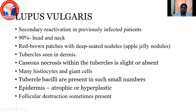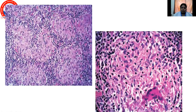Coming to lupus vulgaris, it is a secondary reactivation in previously infected patients with tuberculosis. 90% of lesions are seen in the head and neck and they present as red-brown patches with deep-seated nodules — the apple jelly nodules. Tubercles are seen in the dermis and caseous necrosis within the tubercles may be present or absent. Many histiocytes and giant cells are seen, and tubercle bacilli are present in small numbers. The epidermis is usually atrophic or hyperplastic, with follicular destruction sometimes present. This high-power view shows a nice granuloma with histiocytes and giant cells.